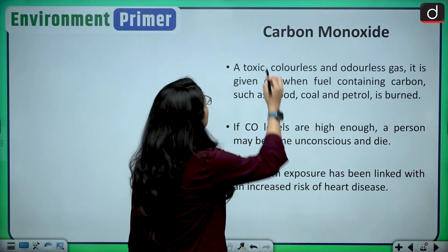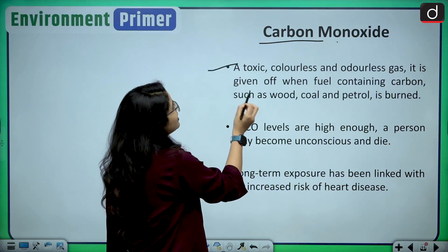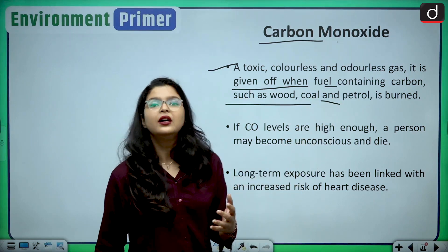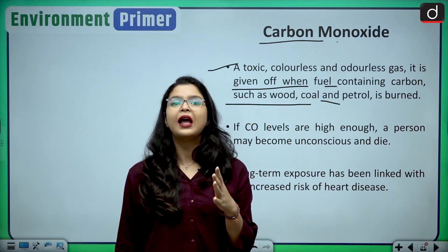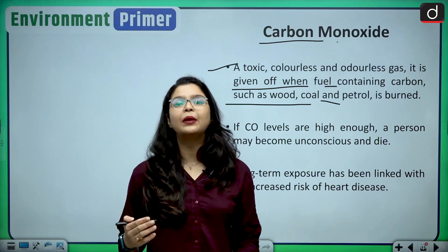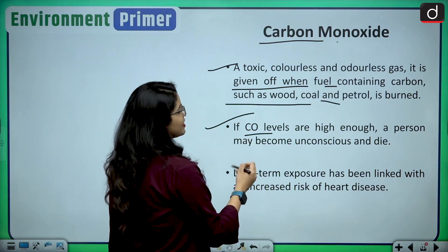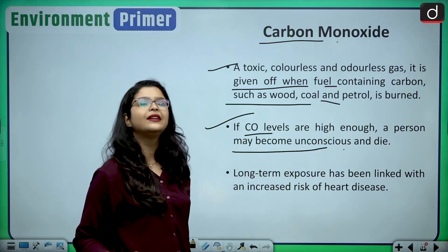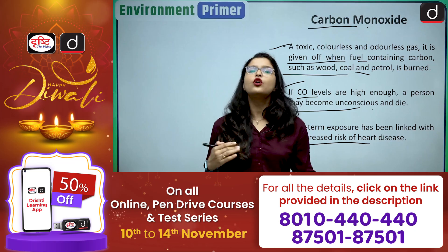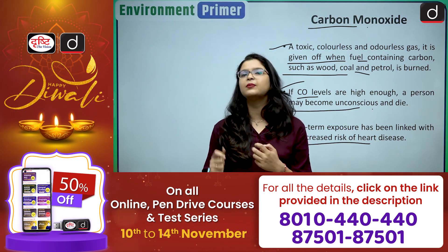Then comes carbon monoxide — another important pollutant. It is a toxic, colorless and odorless gas given off when fuel containing carbon such as wood, coal, and petrol is burnt. Carbon monoxide is also measured by the AQI. It can be lethal — if carbon monoxide levels are high enough, a person may become unconscious and die. Long-term exposure has been linked with an increased risk of heart disease.